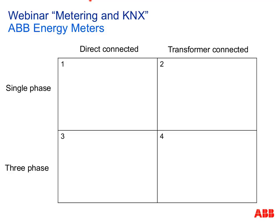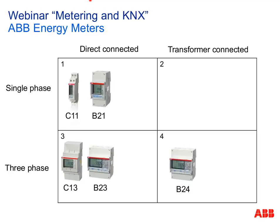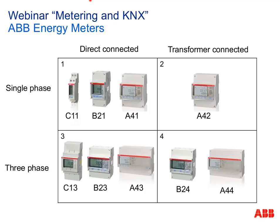In our ABB portfolio we have the C series, B series, and the most powerful A series. The C series cannot be connected to KNX via the meter interface. The B series and A series can. We have single-phase and three-phase devices, and components for direct circuit connection limited to up to 80 amperes; for higher currents a current transformer is required.